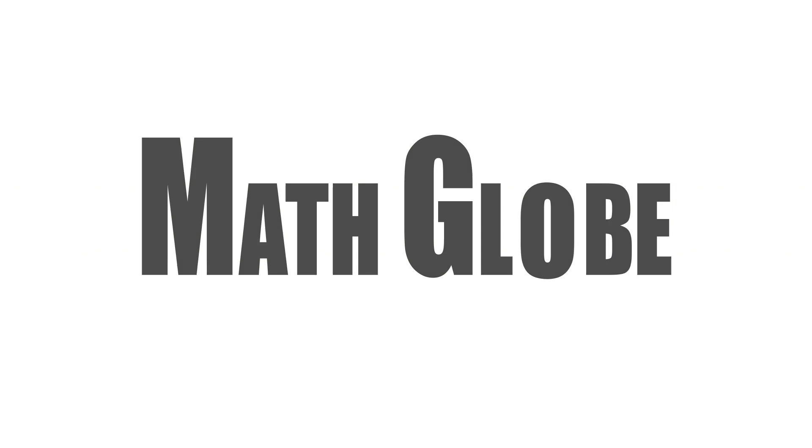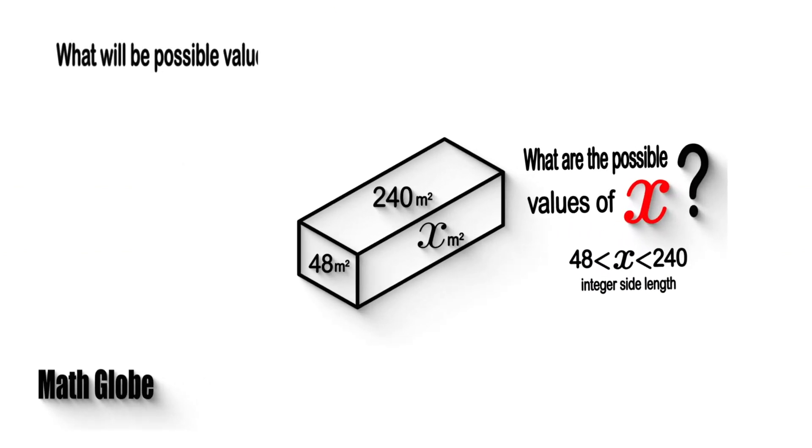Hi, this is Mathglobe. What will be possible value of x if the rectangular prism has integer side lengths?